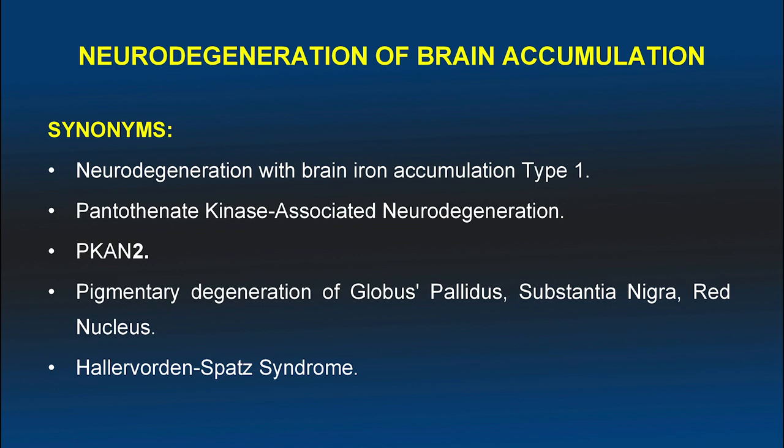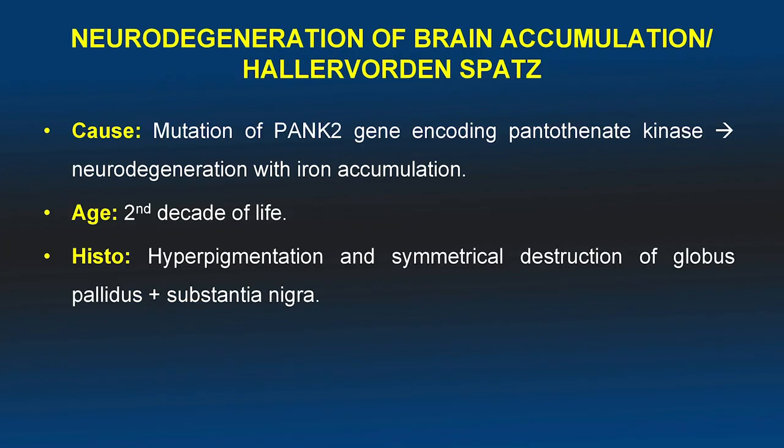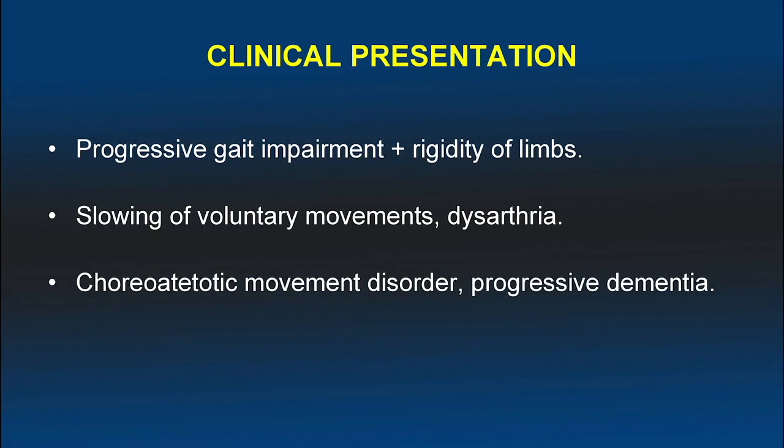The least preferred name remains Hallwarden-Spatz syndrome. The condition is mainly caused by mutation in the PKAN2 gene, resulting in neurodegeneration with iron accumulation. It is most common in the second decade of life. Histopathologically, there is hyperpigmentation in the globus pallidus and substantia nigra.